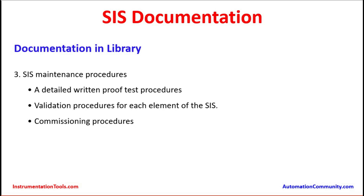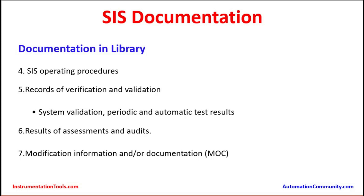Detailed proof test procedures, validation procedures for each element of the safety instrumented system, and commissioning procedures are documents that also need to be maintained in the library for future reference. SIS operating procedures and records of verification and validation — including system validation, periodic and automatic test results, and results of assessments and audits — must be kept. Modification information and documentation must also be maintained through the MOC (Management of Change) system: any modification done on an SIS loop must be documented and pass through the MOC system, which requires different levels of approval.